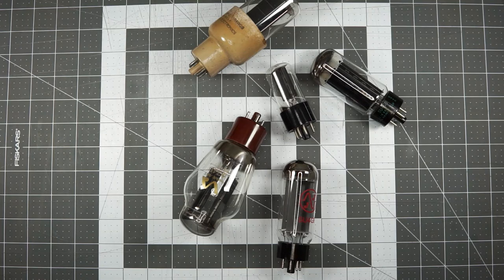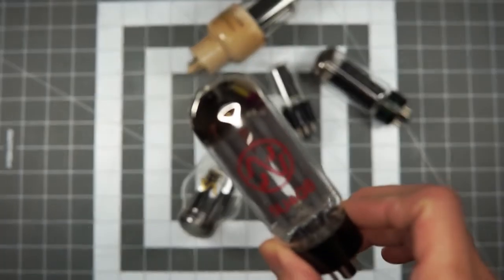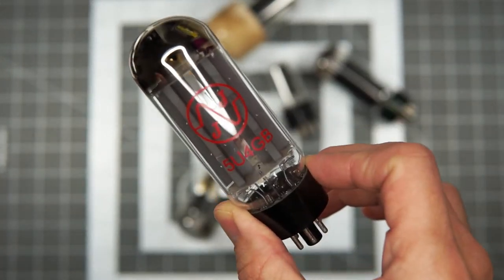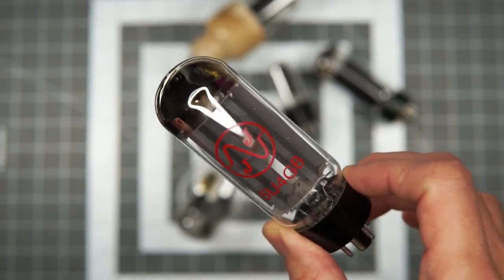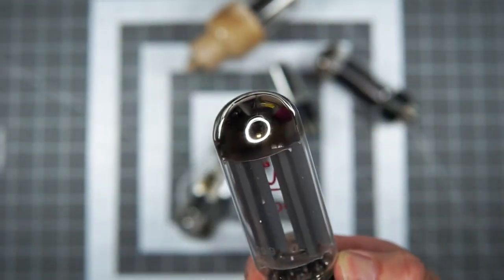They seem cheap. They're fun to play with. And a lot of times it would sort of bring the sound down. I would make it quieter, less punchy, sort of more muddied. And ultimately I ended up with this JJ 5U4GB, which is not inexpensive, but I think it's 18, 20 bucks.